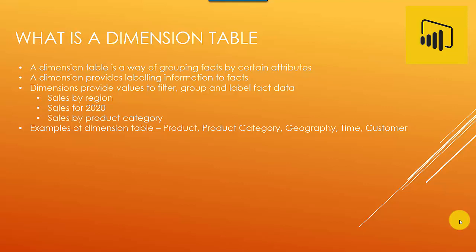A dimension table is a way of grouping facts by certain attributes. For example, you're selling products and you own an e-commerce company, so sales amount could be a measure and a dimension table is a way of grouping facts by certain attributes.